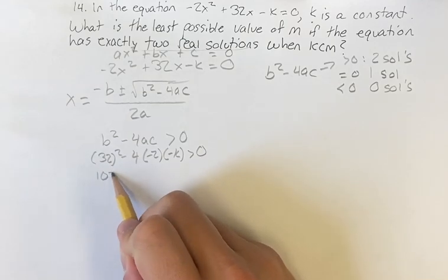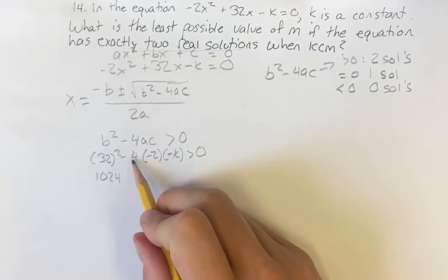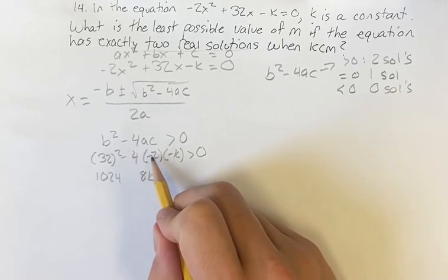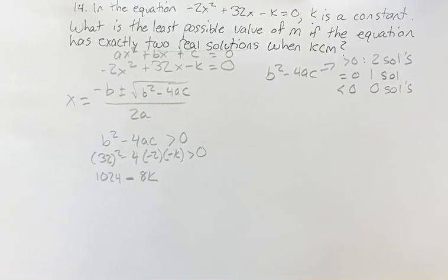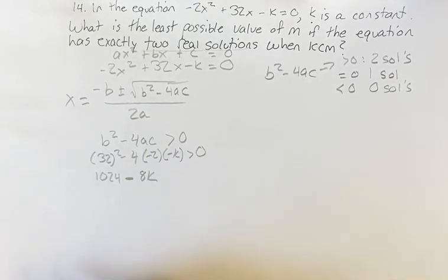32 squared is 1024. Plus 4 times 2 times k is 8k. Three negatives means the negative stays. Two of them are going to cancel out, leaving one remaining, is greater than 0.